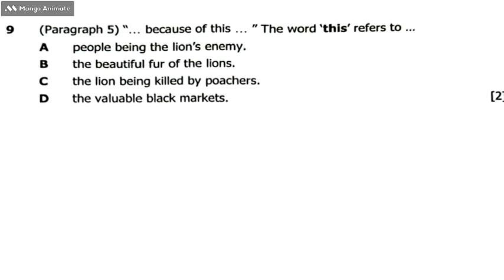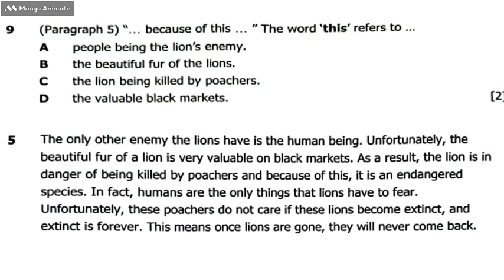To identify the correct answer, let's go to the passage and read it together, so that we understand what 'this' stands for or represents. Paragraph 5 is as follows: 'The only other enemy the lions have is the human being. Unfortunately, the beautifier of a lion is very valuable on the black market. As a result, the lion is in danger of being killed by poachers.'